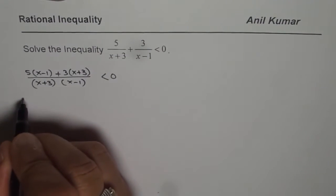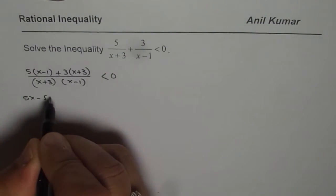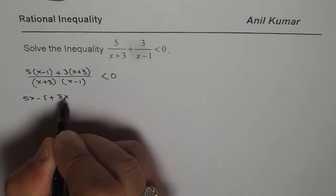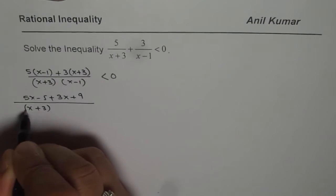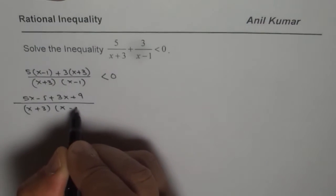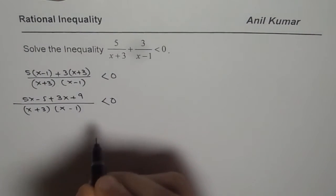Let us expand and simplify the numerator which is 5x minus 5 plus 3x plus 9 over, you should not expand the denominator. We need ultimately all these terms in factored form.